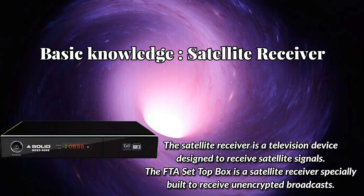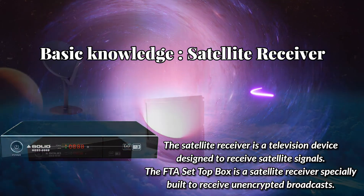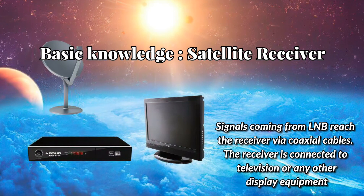Basic knowledge — Satellite Receiver: The satellite receiver is a television device designed to receive satellite signals. The FTA set-top box is a satellite receiver specially built to receive unencrypted broadcasts. Signals coming from the LNB reach the receiver via coaxial cables, and the receiver is connected to a television or any other display equipment.